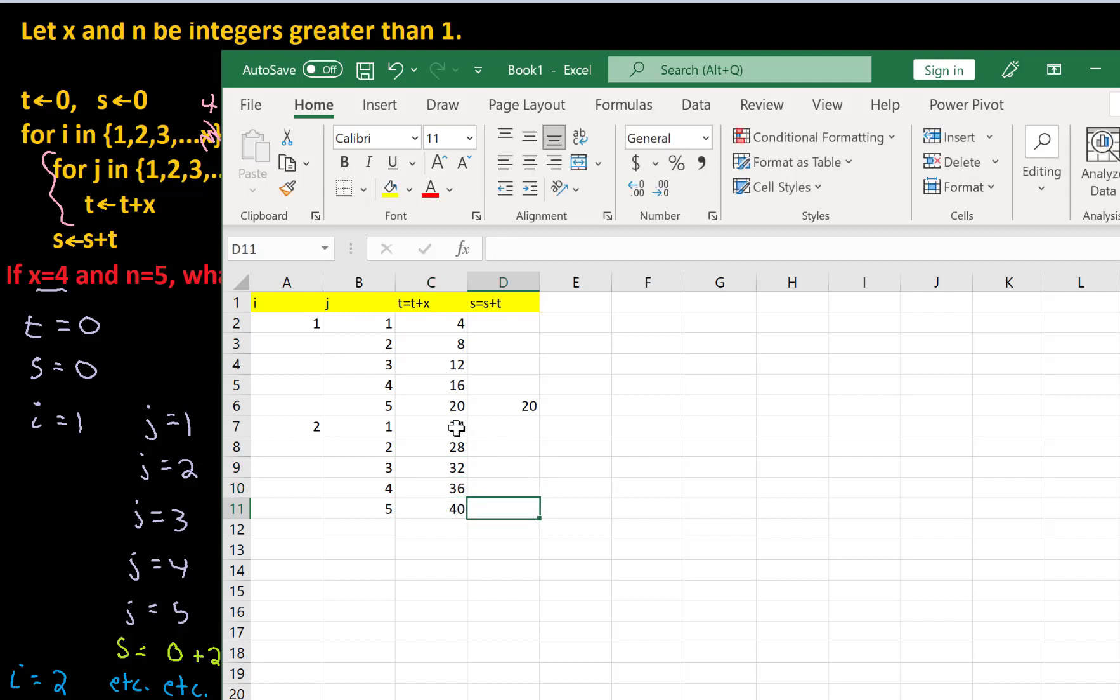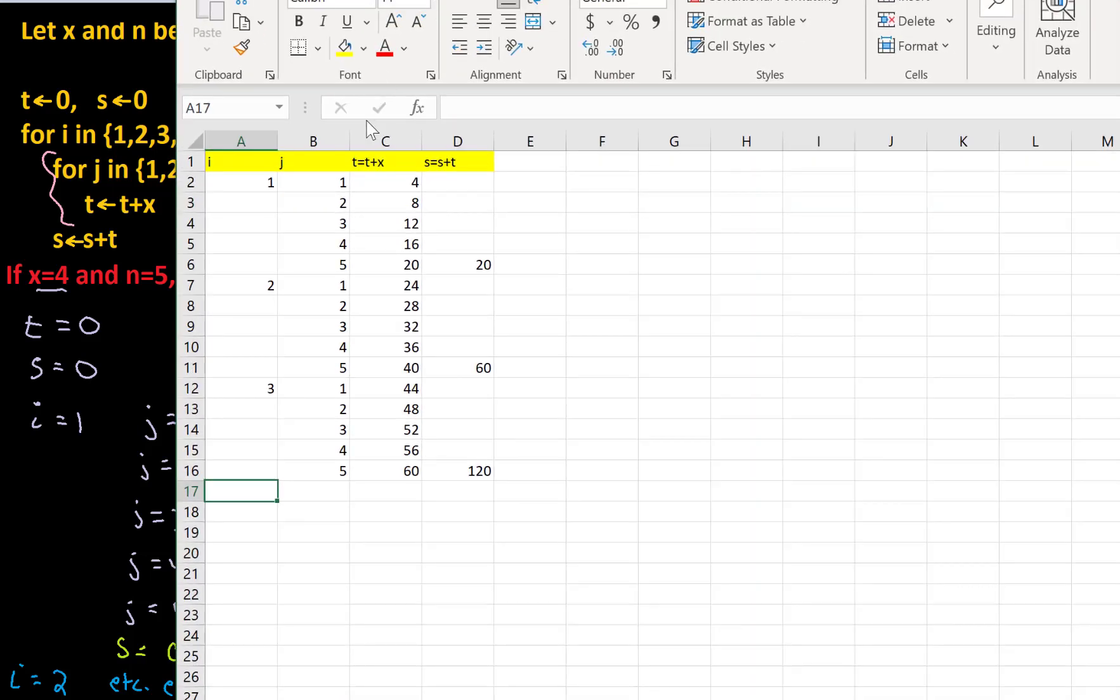And again, I see this net impact is I added 16 each time I do a trip through the j loop. And then I keep track of s. s is the old s plus t. So that's going to give me 20 plus 40. Give me 60. And so if we keep on going here, we can get to our final answer, which turns out to be 200 for the values that I have chosen.